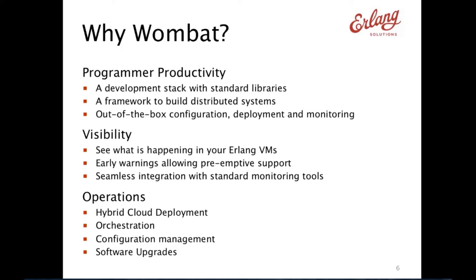I would like to spell out how the visibility and operations parts translate to Wombat. In Wombat's case, visibility means you see what's going on inside your system. When Wombat connects to your nodes, it starts collecting metrics, notifications, and alarms from these nodes. You can use this data to both prevent failures from happening, and if they do happen, you can use this data to investigate why and prevent it from happening again.